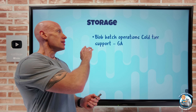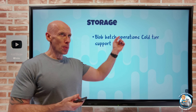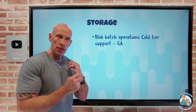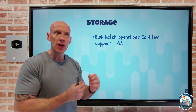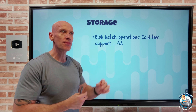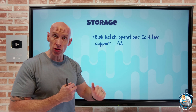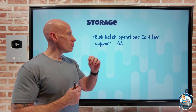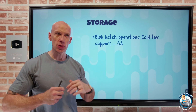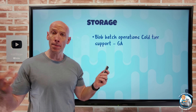On the storage side, blob batch operations now support the cold tier. Batch operations let me put multiple operations within one body of a request — useful for deleting a whole bunch of files or changing the tier of a large number of blobs. Now, as part of that blob batch operation when I want to change tier, I can specify the newer cold tier. So we have hot, cool, cold, and archive — and I can use cold with those blob batch operations.